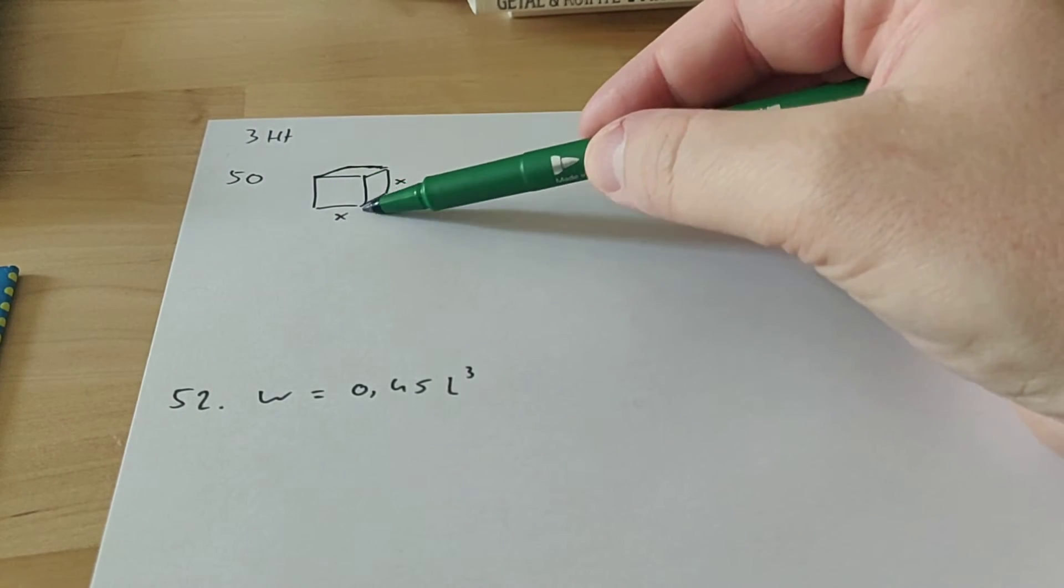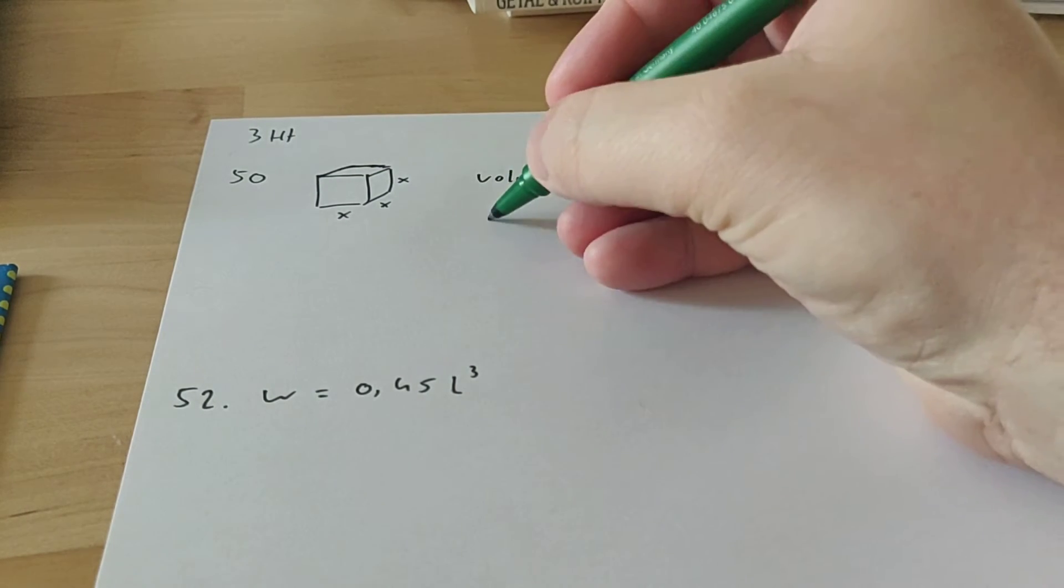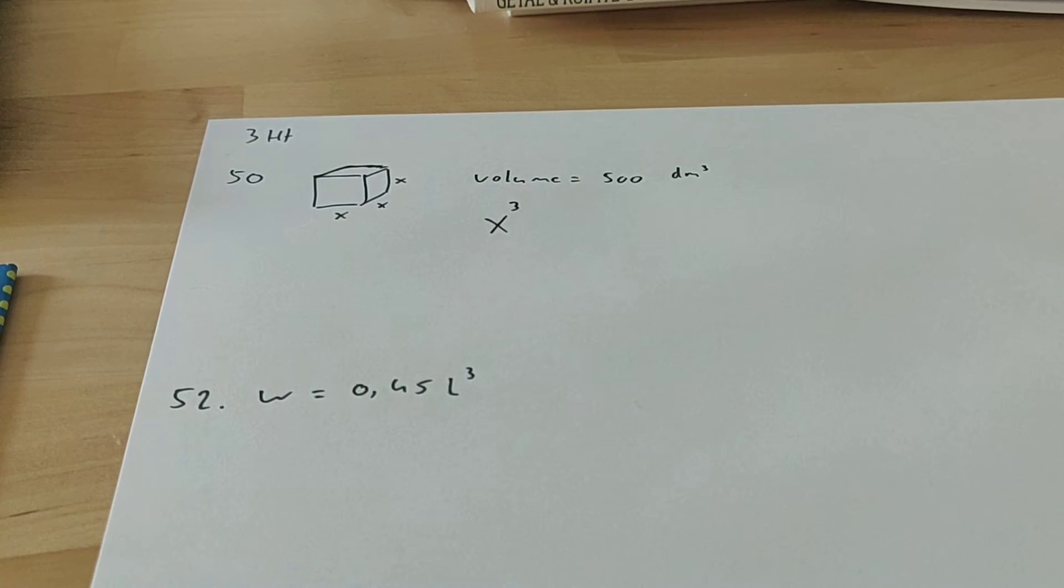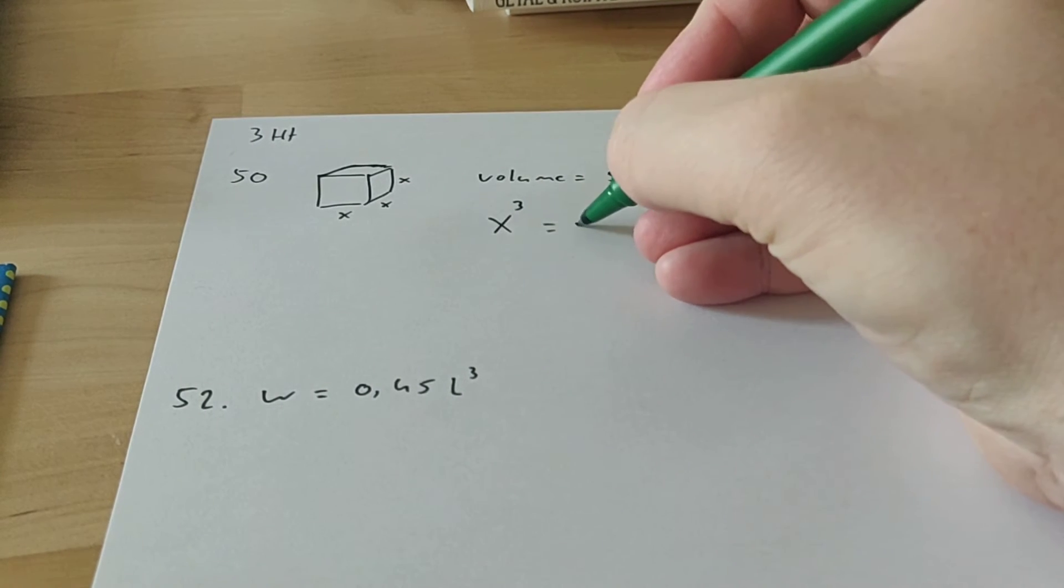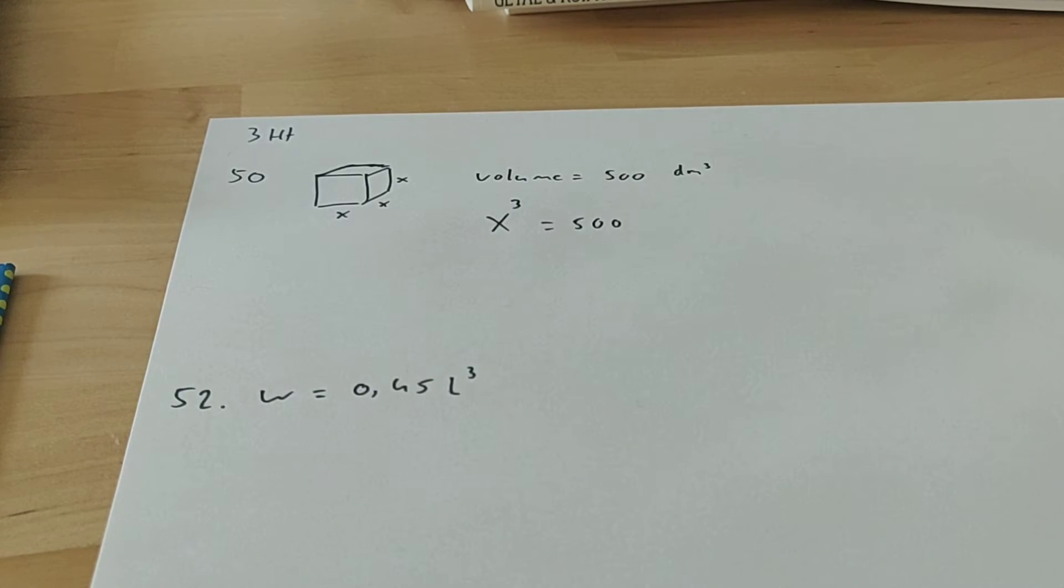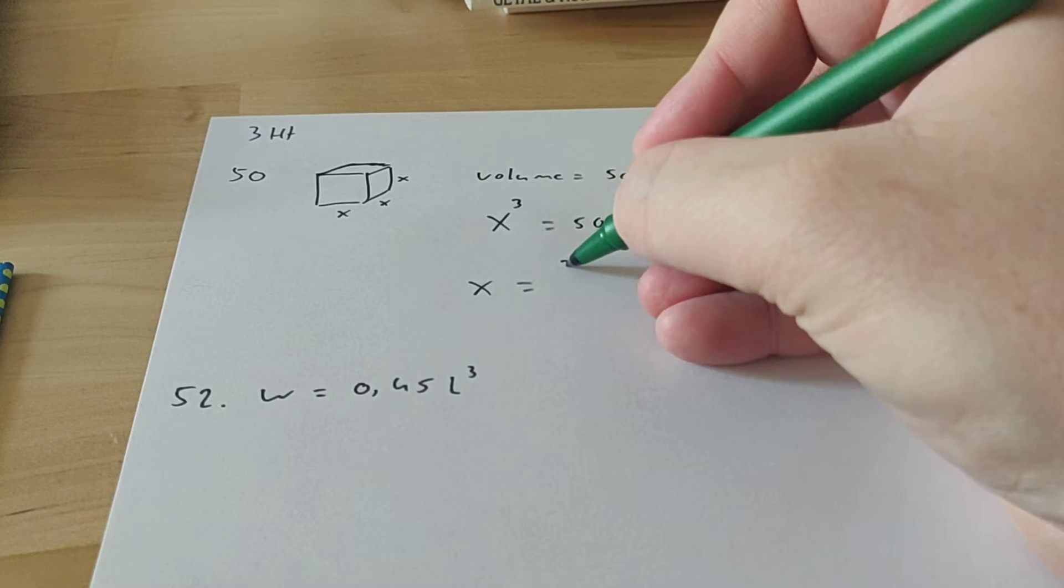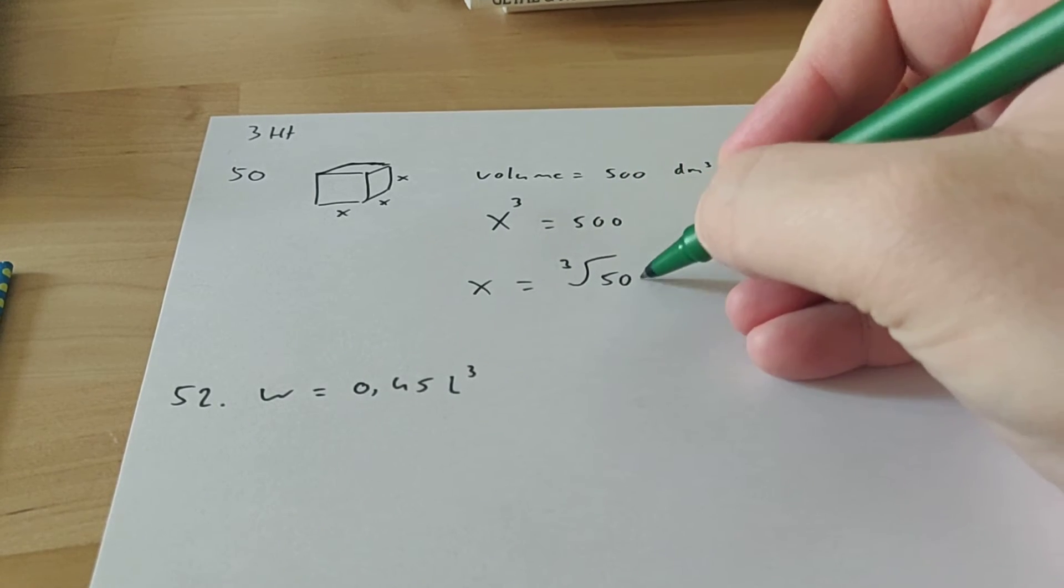Well the volume is length times width times height, so X times X times X is X to the power of 3. If you calculate that you get 500 cubic decimeters. So if you want to know what X is, you take the third power root of 500.